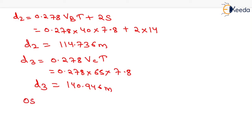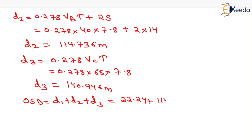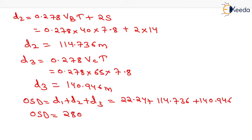We now compute OSD, which equals D1 + D2 + D3. D1 is 22.24 m, D2 is 114.736 m, and D3 is 140.946 m. Adding these three values, OSD equals 280 m. That is the overtaking sight distance.